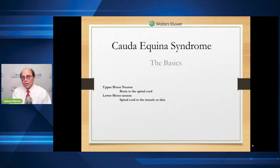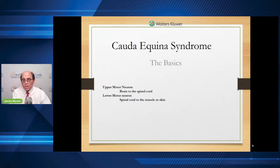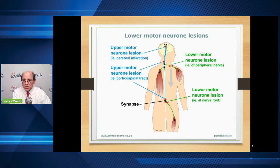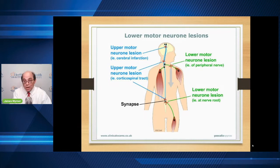Now with cauda equina, we've talked about the different layers within the brain and the different types of nerves. I want to talk about the upper motor nerves and the lower motor nerves. This slide shows that same pattern: upper motor nerves go from the brain down to the spinal cord, and at the spinal cord they synapse — or connect — with the nerves that go out to the muscles. Upper nerves: from the brain to the spinal cord. Lower nerves: from the spinal cord to the muscles. Cauda equina, which you can see down at the bottom, is going to have a lot of those lower motor nerve symptoms.